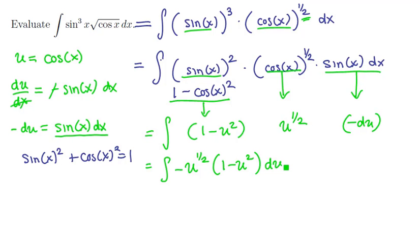So how do we attack this new integral? We'll notice that it's a product, but this time it's expandable. So we can distribute in. That's going to give us the integral of negative u to the one-half power, minus minus u to the one-half plus two, or five-halves power.